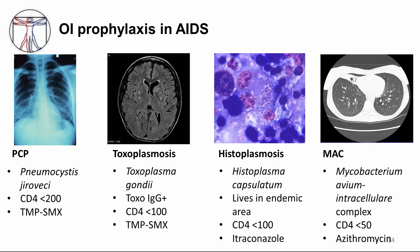The third opportunistic infection is histoplasmosis, caused by Histoplasma capsulatum, a dimorphic fungus. This is offered to patients who live in endemic areas such as the Ohio and Mississippi River Valley, Indiana, etc. If their CD4 count is less than 100 and they live in an endemic area, itraconazole is recommended. For disseminated MAC prophylaxis — MAC is caused by Mycobacterium avium intracellulare complex — we would typically offer prophylaxis with azithromycin 1200 milligrams once weekly for those patients who have a CD4 count less than 50.